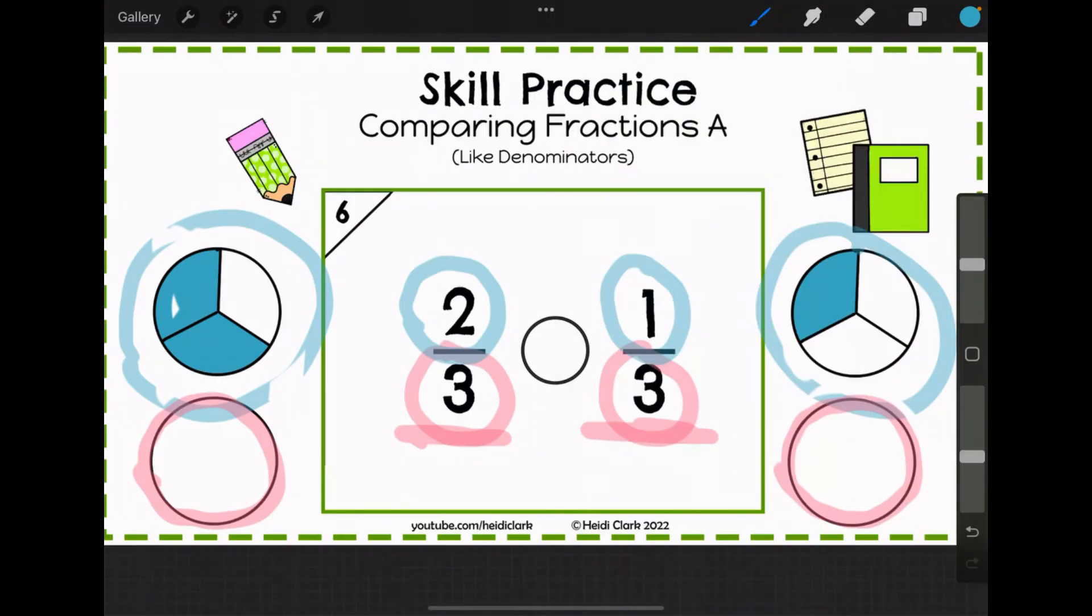So just remember that denominator is how many it's split into thirds, but the numerator is how many pieces you actually get. So on the left here, you're going to get two of those pieces, and on the right, you're going to get one piece.